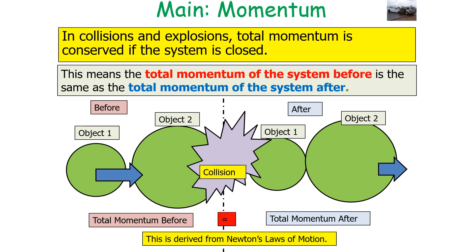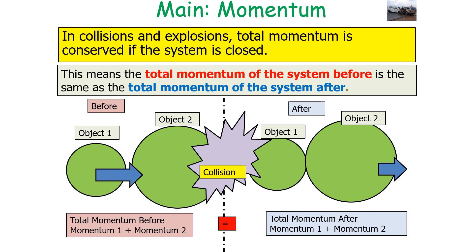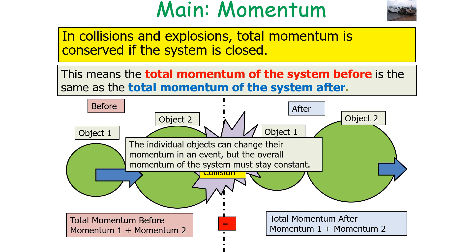This is derived from Newton's laws of motion. The total momentum before of objects one and two must equal the total momentum after of one and two combined. The individual objects in the system can change their momentum in an event, but the overall momentum of the system must stay constant.